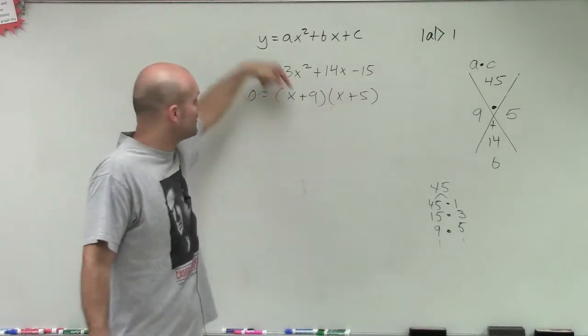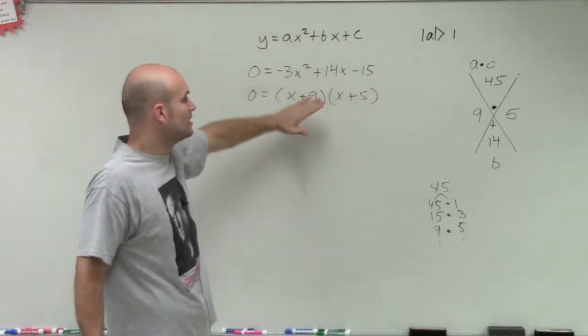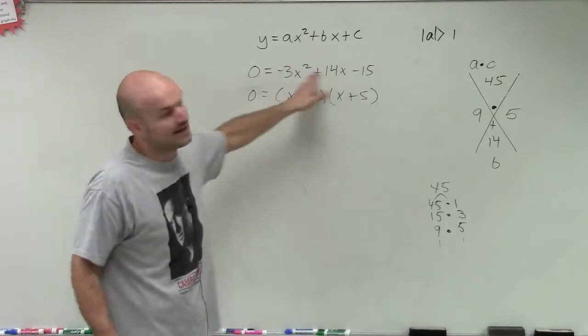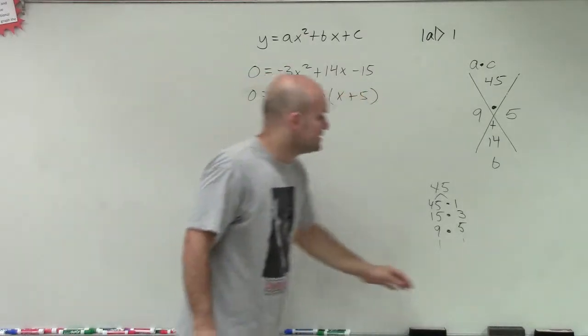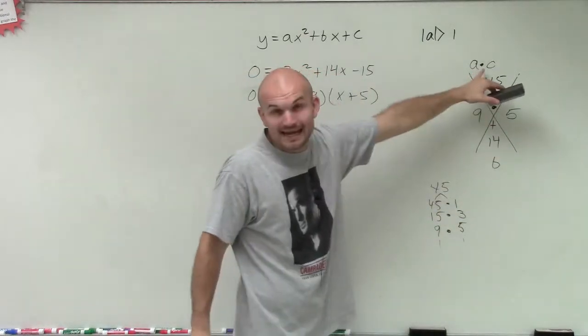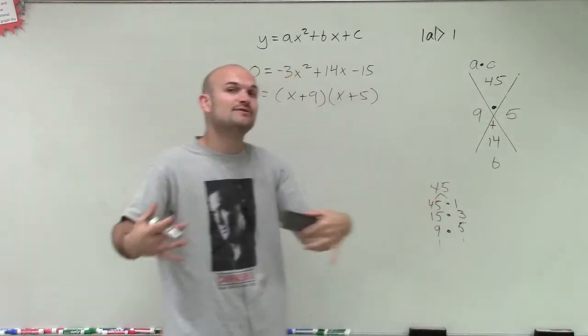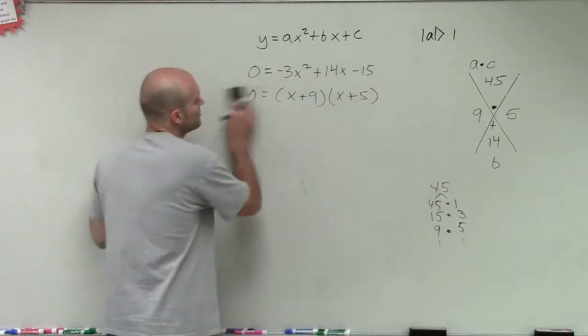You're going to get x times x is x squared. We need to get negative 3x squared when we multiply our two factors. And actually, we need to get the whole thing back. So we have this A that's multiplied. So somehow, we need to be able to factor this out. So I'm going to show you how to do that.